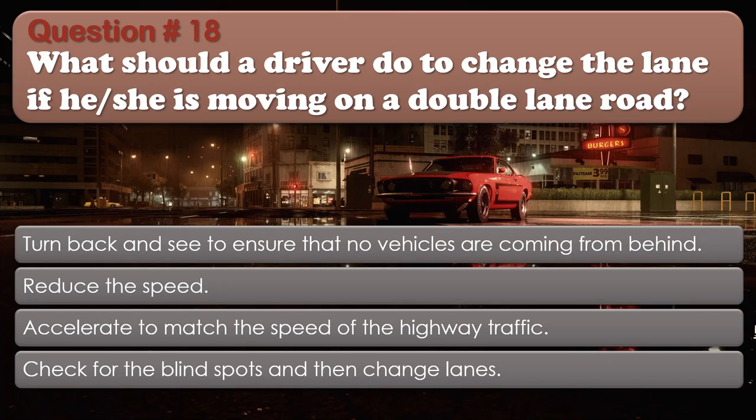Question number 18. When entering a highway, what should a driver do? Turn back and check to ensure no vehicles are coming from behind. Reduce the speed. Accelerate to match the speed of the highway traffic. Check for blind spots and then change lanes. The correct answer is: Check for blind spots and then change lanes.